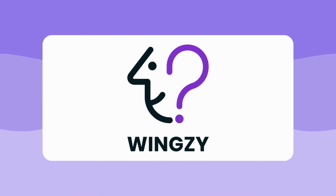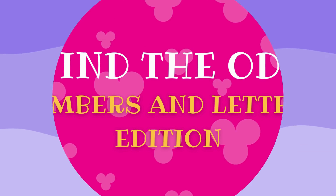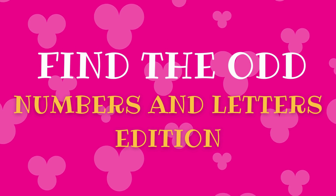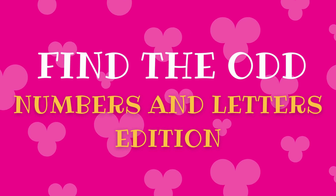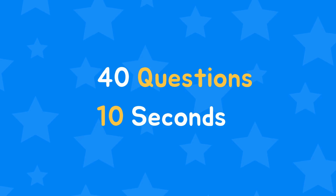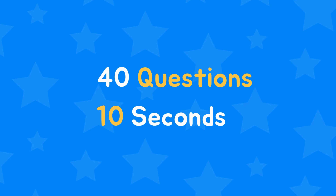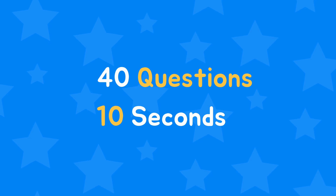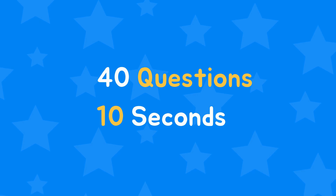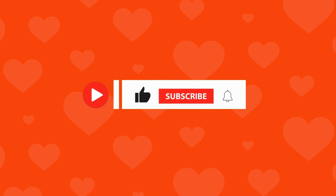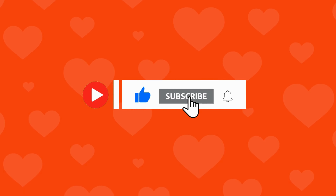Welcome back to Wingsy. Today, let's test your power of observation. We'll play find the odd numbers and letters emoji challenge, featuring four different levels: easy, medium, hard, and impossible. There are 36 questions and you'll have a quick 10 seconds to answer. Are you ready? Then please subscribe to our channel and let's get started.